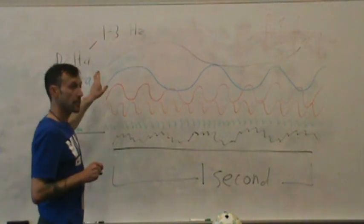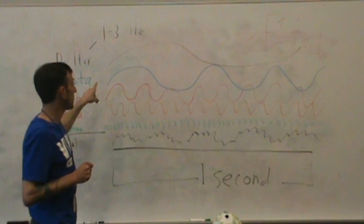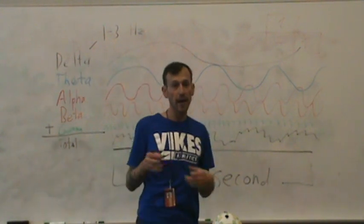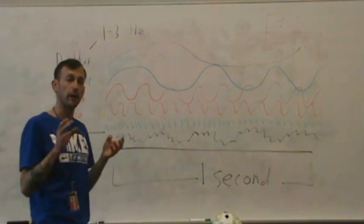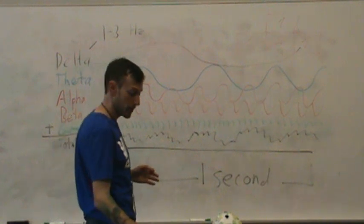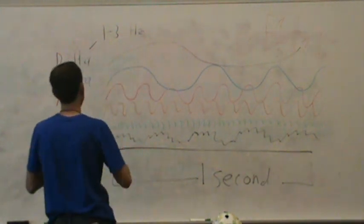The second slowest one is going to be theta. And you'll notice that theta here has about three and a half cycles. Theta is going to be somewhere usually between about four and seven cycles per second, or four to seven hertz.